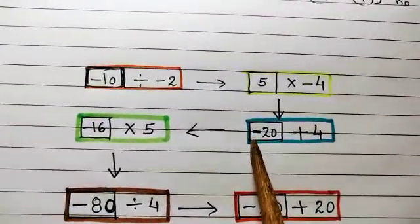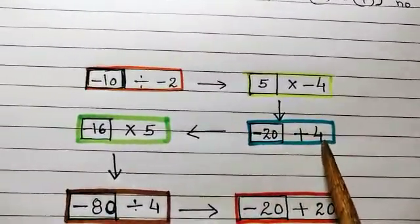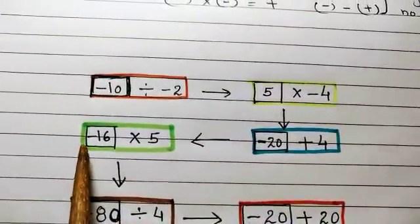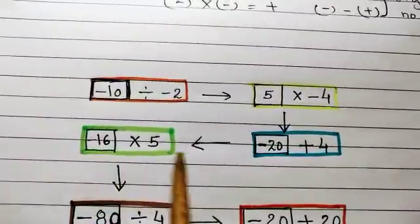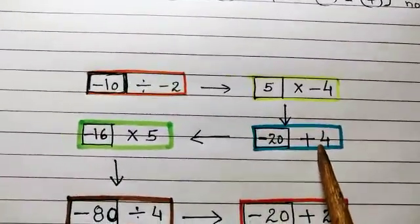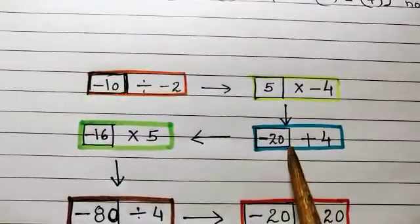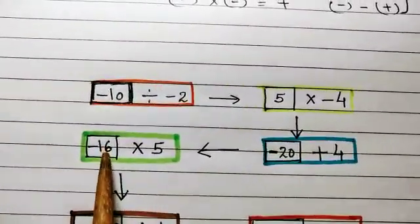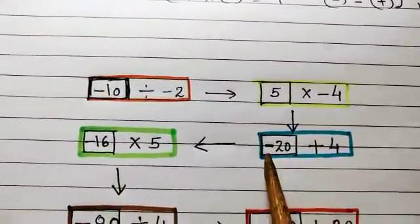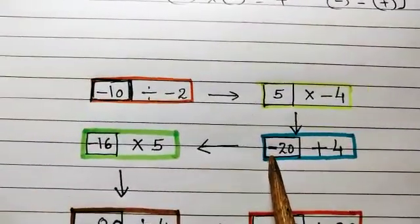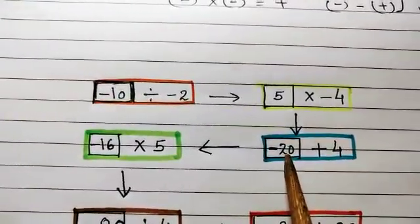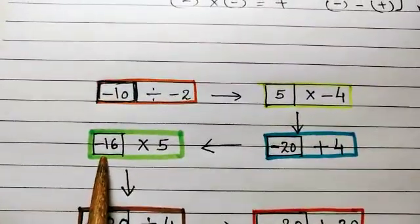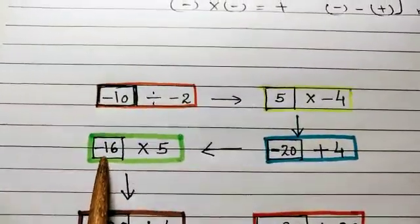Again, when this negative integer is added to a positive integer, that is, minus 20 plus 4, you will be getting minus 16 or negative 16. But how? In this case, you will be subtracting, as you have learnt in the lower classes: 20 minus 4 is 16, and the sign you have to put is whichever the larger number is having. So here 20 is the larger number, and it is having a negative sign, so your solution will be a negative integer, that is, minus 16.